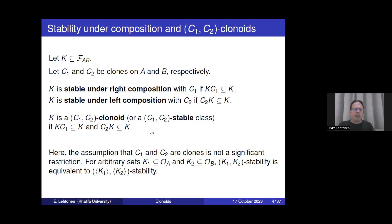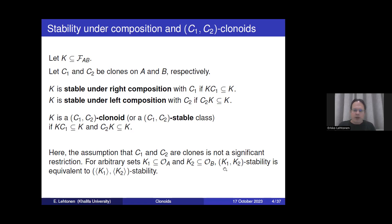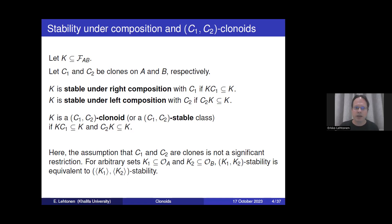If K is both stable under right composition with C1 and stable under left composition with C2, we call it a C1-C2 clonoid or C1-C2 stable class. Here we assume C1 and C2 are clones on the two sets, but this is not a significant restriction, because K1-K2 stability is equivalent to stability where we take the clones generated by K1 and K2 as parameters.